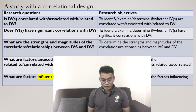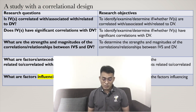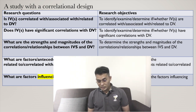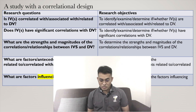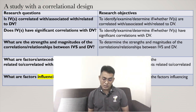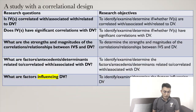Number three: what are the strengths and magnitudes of the correlations or relationships between independent variables and dependent variable? And the research objective is: to determine the strengths and magnitudes of the correlations or relationships between independent variables and dependent variables.